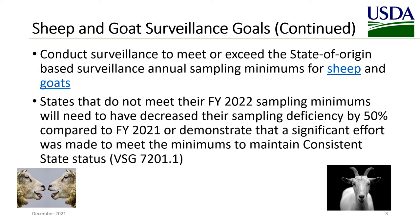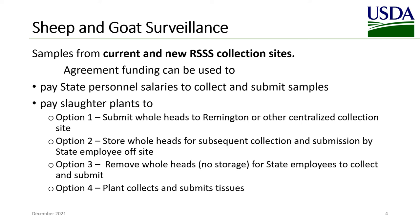Additional activities for sheep and goat surveillance include conducting surveillance to meet or exceed the state of origin-based surveillance annual sampling minimums for sheep and goats. States that do not meet their FY22 sampling minimums will need to have decreased their sampling deficiency by 50 percent as compared to FY 2021, or demonstrate that a significant effort was made to meet the minimums to maintain consistent state status. Operative agreement funding can be used to pay state personnel salaries to collect and submit samples, or pay slaughter plants to: option one, submit whole heads to Remington or other centralized collection sites; option two, store whole heads for subsequent collection and submission by state employees off-site; option three, remove whole heads for state employees to collect and submit; and option four, the plant collects and submits tissues.